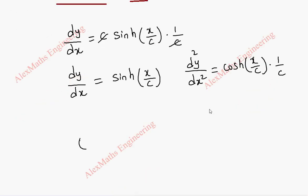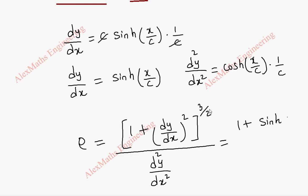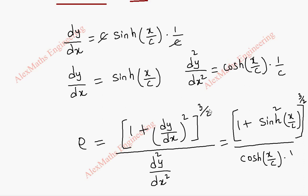Now, radius of curvature: rho is [1 plus (dy/dx) squared] to the power 3/2, divided by d²y/dx². So this becomes [1 plus sinh²(x/c)] to the power 3/2 in the numerator, and in the denominator we have cosh(x/c) into 1/c.